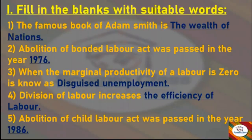Next — when the marginal productivity of a labor is zero, it is known as dash. Answer: Disguised Unemployment. Next — division of labor increases dash. Answer: the efficiency of labor. Next — Abolition of Child Labour Act was passed in the year dash. Answer: 1986.